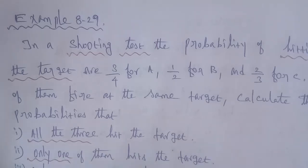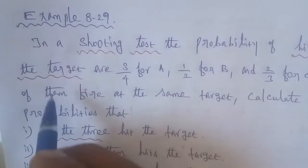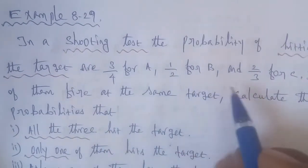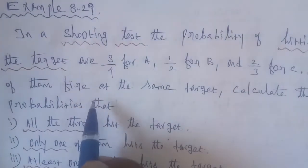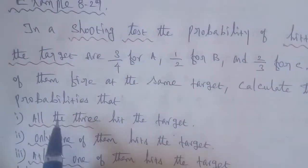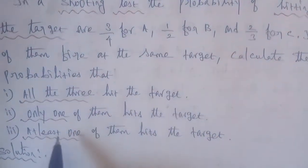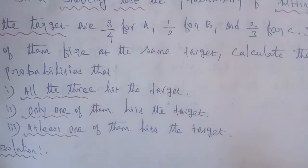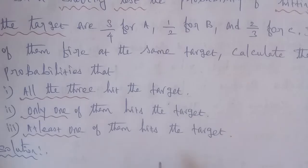Example 8.29: In a shooting test, the probability of hitting the target is 3 by 4 for A, 1 by 2 for B, and 2 by 3 for C. If all of them fire at the same target, calculate the probability that: Sub-question 1 — all three hit the target; Sub-question 2 — only one of them hits the target; Sub-question 3 — at least one of them hits the target.